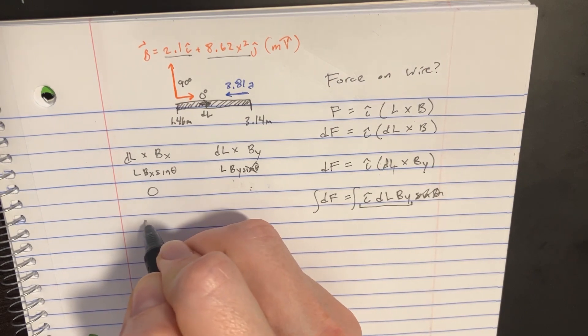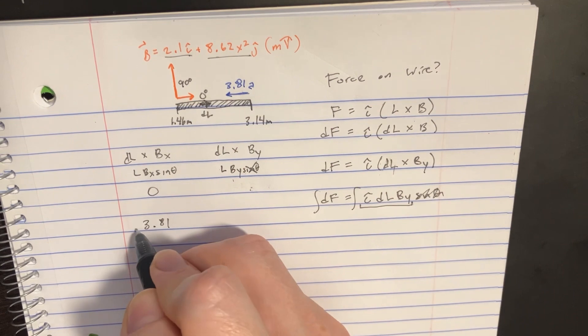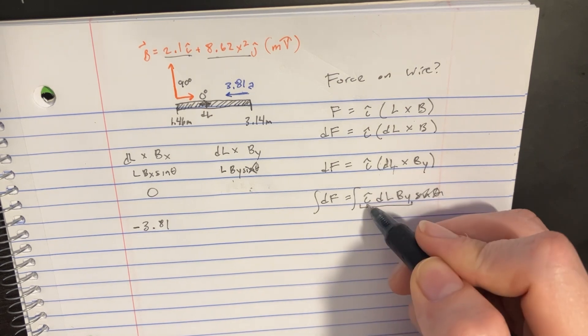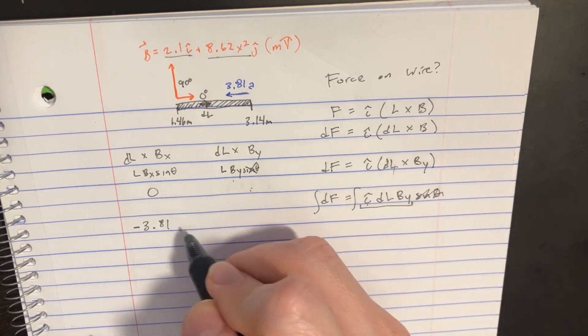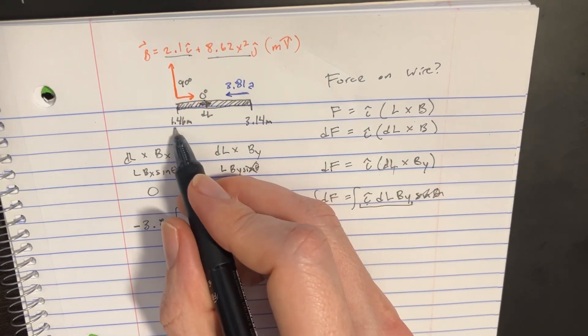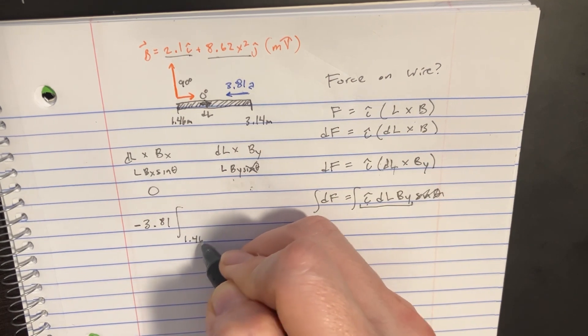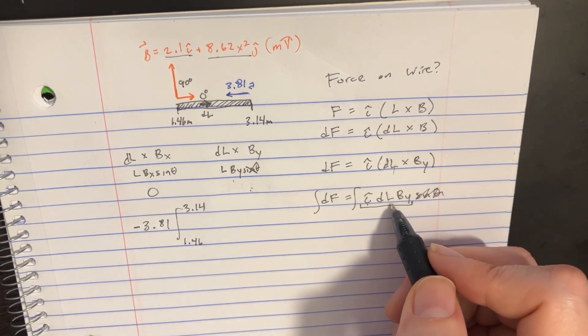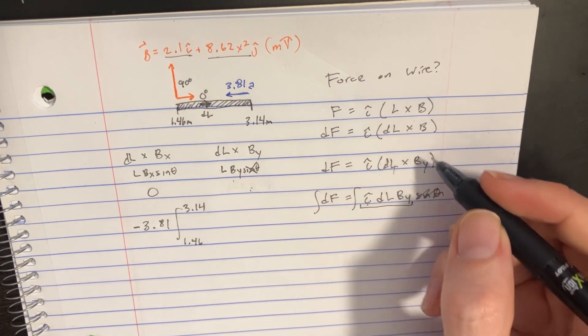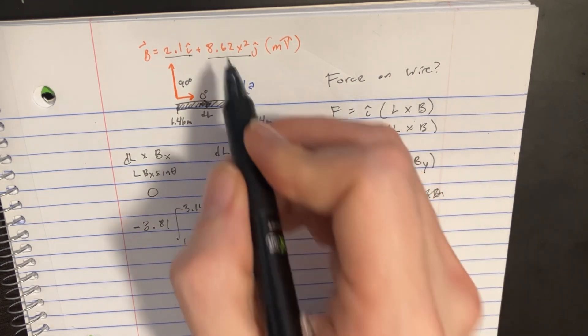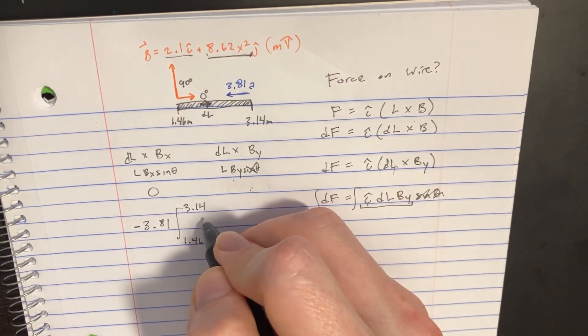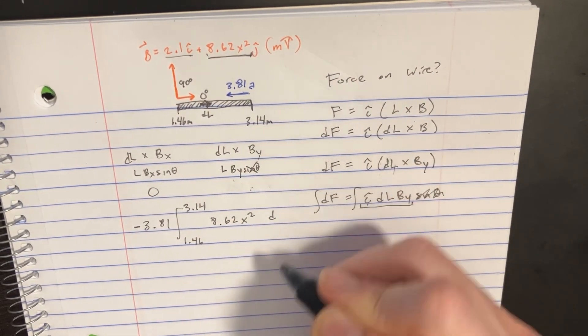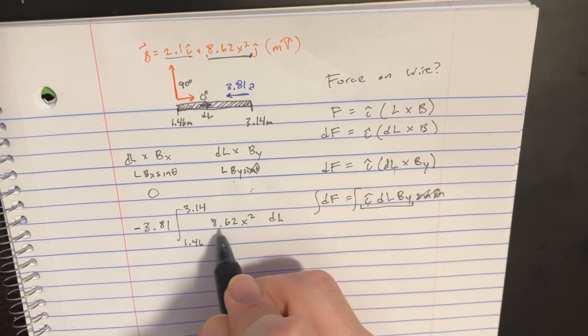We'll get 3.81, and this is in the negative direction. That's the i side. For dL, the range is going to be from 1.46 to 3.14. Then we have B_y, which is 8.62x². We're going to stick that in here over the dL.